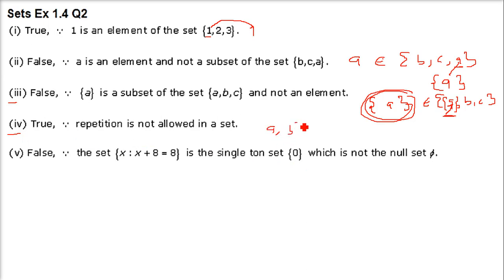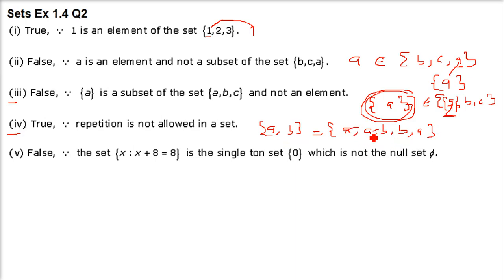Next: {a, b} = {a, a, b, b, b, a}. Repetition is allowed in sets, so we can write this as just {a, b}. So they are two equal sets, and this equality holds. This is true.